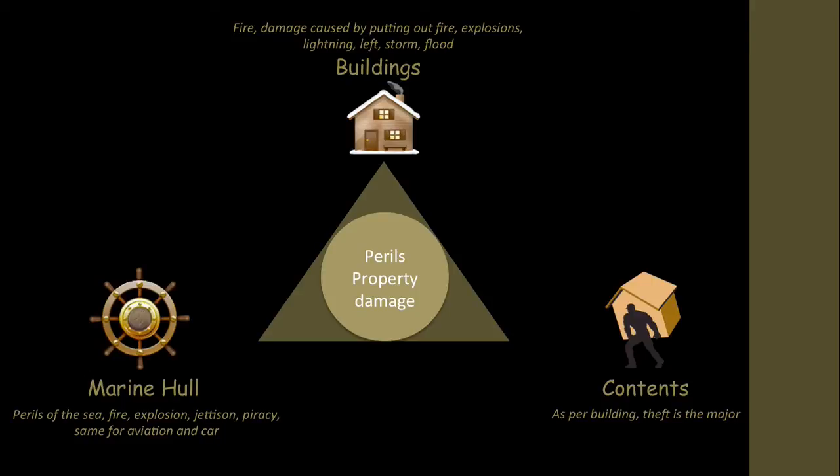The perils with property damage include the building itself being burnt down or struck by lightning. Theft is included because when someone breaks into your house, they break a window or cause minor damage. Contents coverage is for when people break in and steal your goods. And then there's marine hull — the perils of the sea — such as if your boat sinks, your plane falls out of the sky, or your car crashes. That covers the property damage perils.